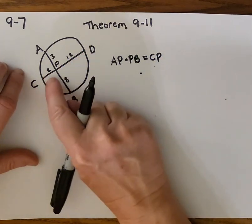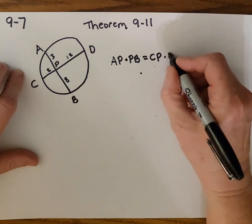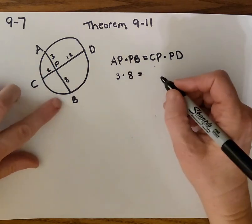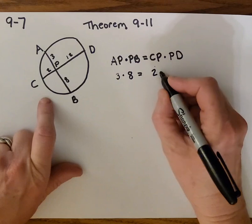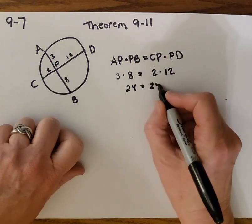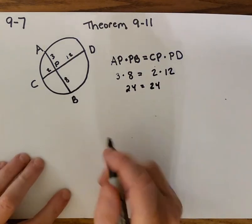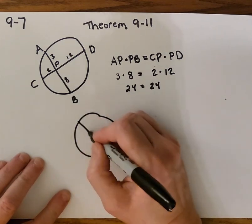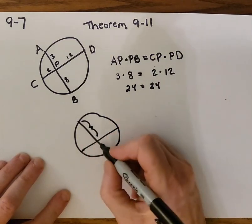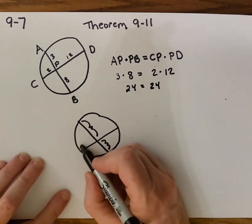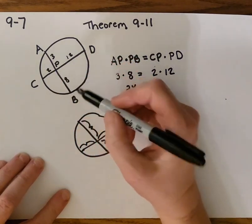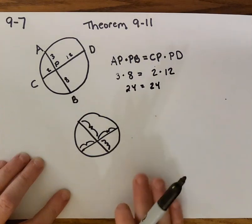Let's see if that works. If AP is 3 and PB is 8, we have 3 times 8. CP is 2 and PD is 12, so 3 times 8 is 24 and 2 times 12 is 24. So theorem 9-11 says: when you have two chords that intersect inside the circle, AP times PB equals CP times PD.